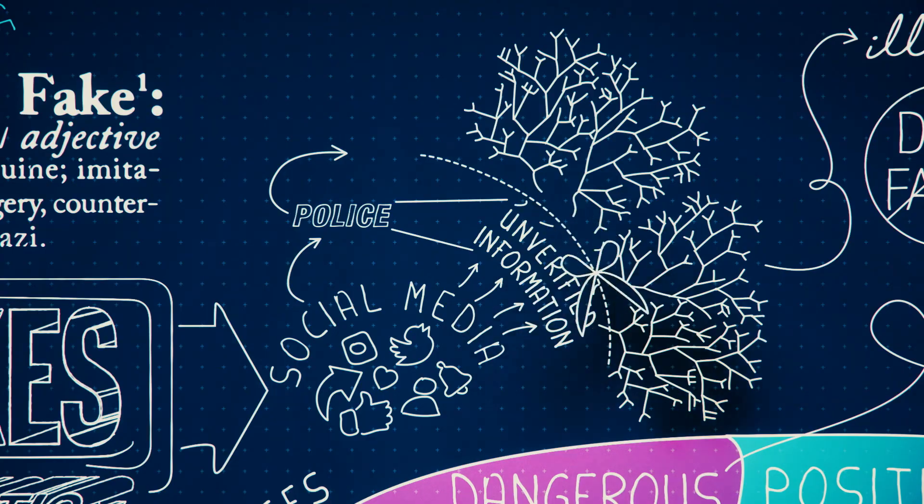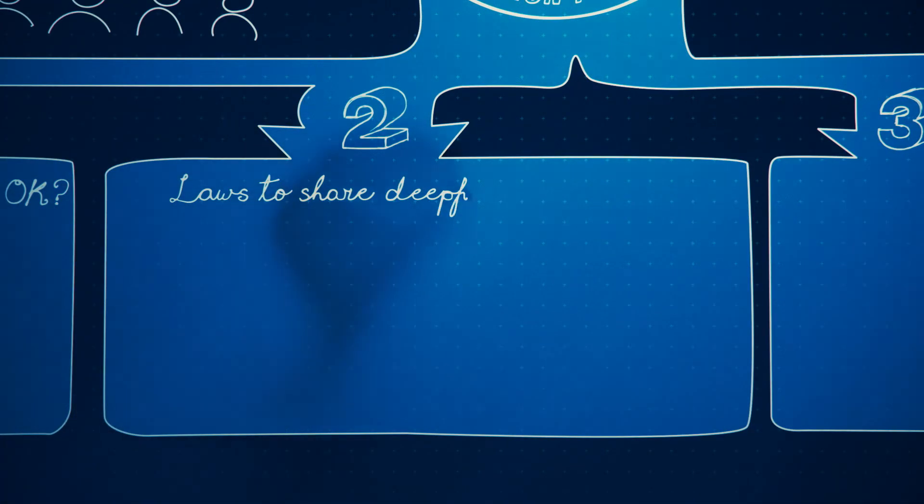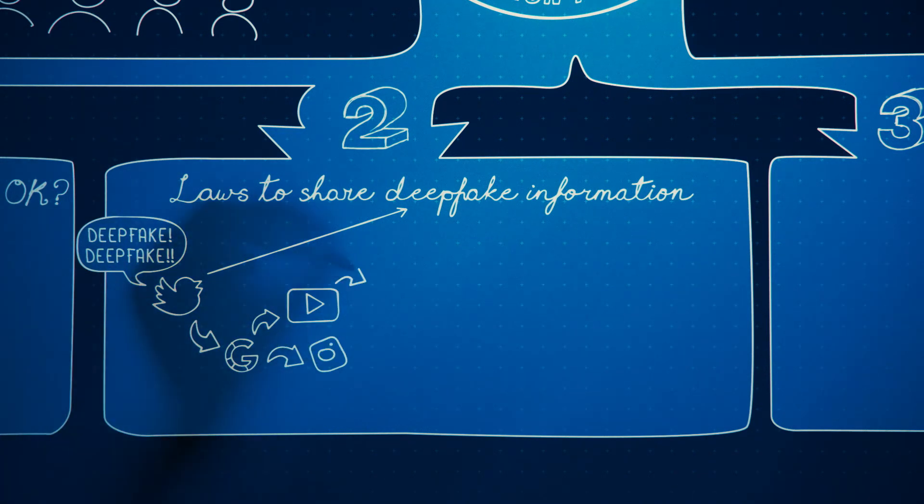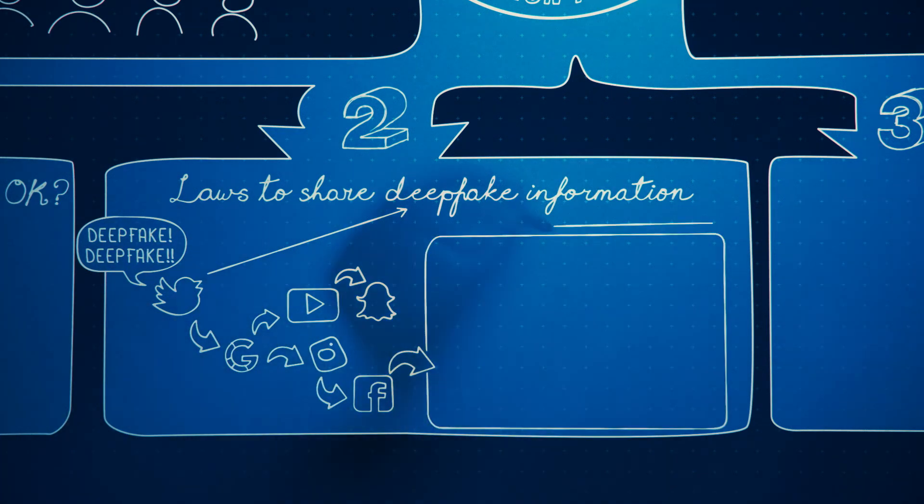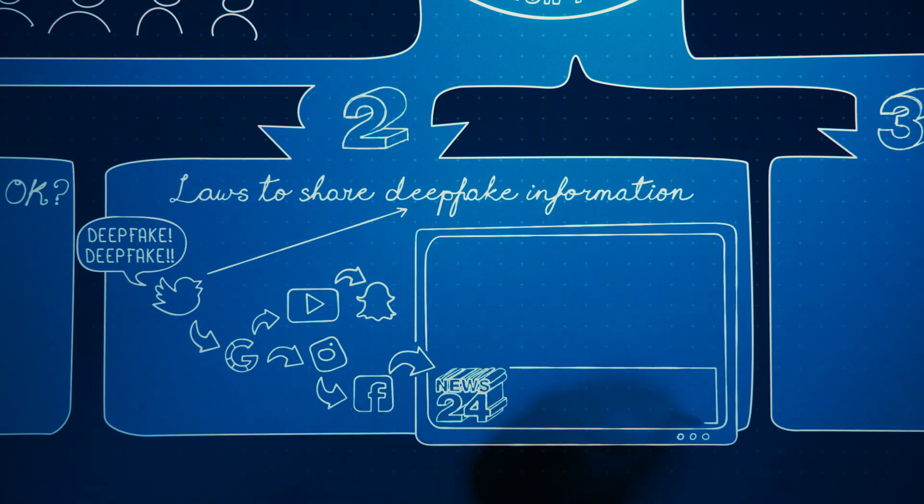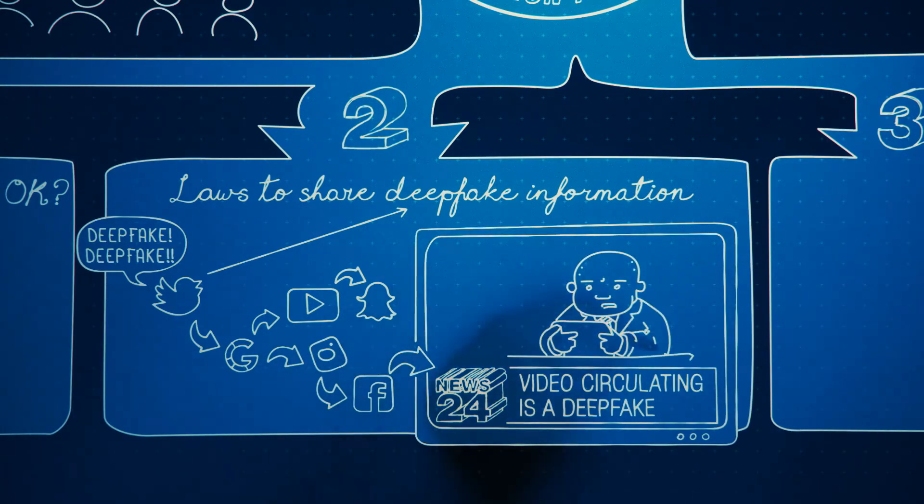Another thing countries could do is pass laws to allow internet platforms to share information about deepfakes. This would make it easier for platforms to alert each other to a malicious deepfake before it spread and warn news agencies before it infiltrated the mainstream news cycle.